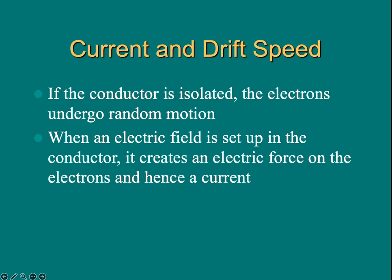If a conductor is isolated with no electric field or potential applied to the conductor, the electrons undergo random motion in all directions. But on average, the average movement of the electron is zero.